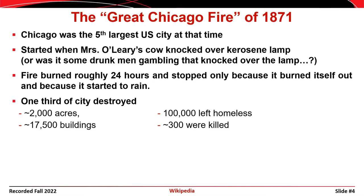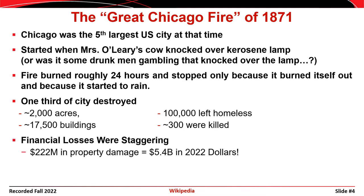When the fire reached these natural boundaries, it ran out of fuel and the rain put it out. The fire destroyed approximately 2,000 acres, or one-third of the city. 17,000 buildings were destroyed, 300 people were killed, and 100,000 people were left homeless. It was a massive catastrophe. The financial losses were staggering, and insurance companies were left on the hook for much of that.